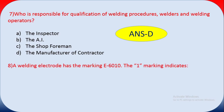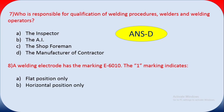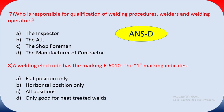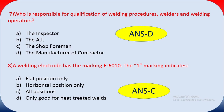Question eight: a welding electrode has a marking of E6010 — what does the '1' indicate? E means electrode, 60 means 60,000 psi tensile strength, and 1 means position. Options: A flat position only, B horizontal only, C all positions, D only for heat-treated welds. The answer is C — '1' means all positions. Remember: 1 equals all positions.